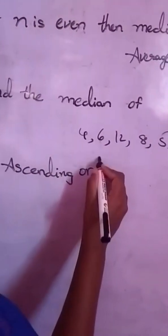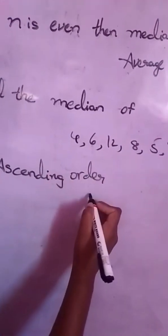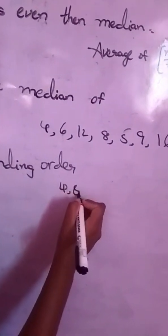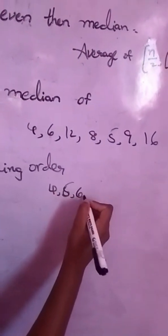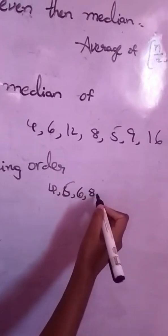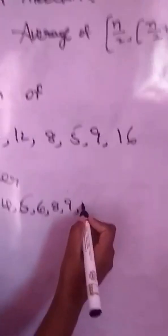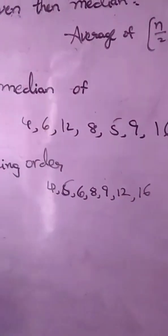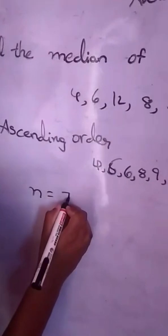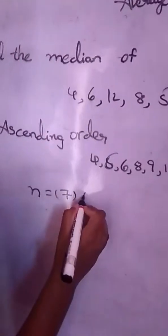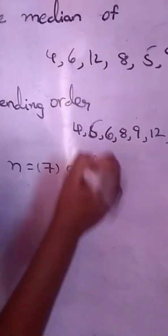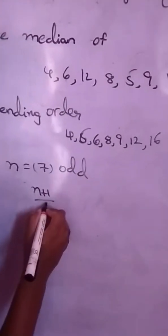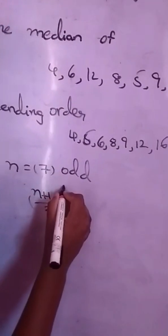Ascending order: 4, 5, 6, 8, 9, 12, 16. Total is 7 observations. So N equals to 7. 7 is odd. So odd formula: N plus 1 by 2 observation.